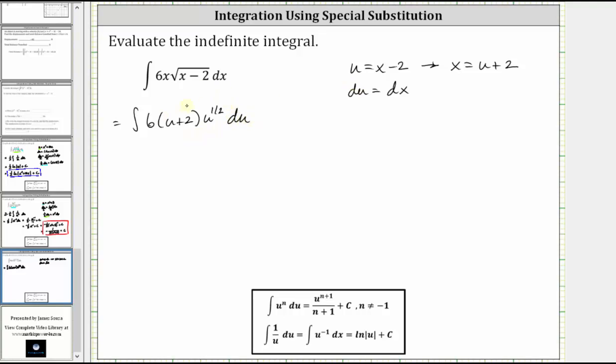Let's go ahead and rewrite this as the integral of six u to the one-half times the quantity u plus two, and I will distribute six u to the one-half. Six u to the one-half times u to the first is equal to six u to the three-halves, since one-half plus one is three-halves. And then we have plus six u to the one-half times two is 12 u to the one-half.